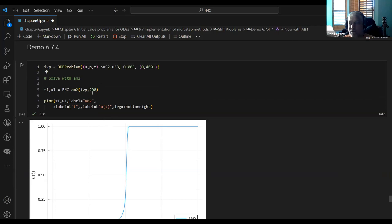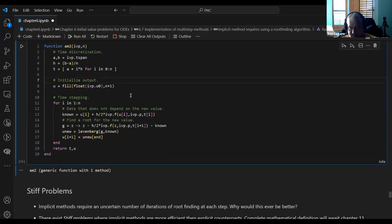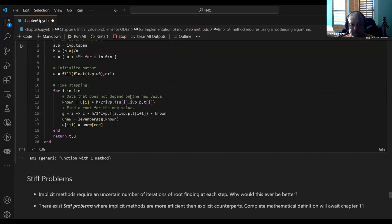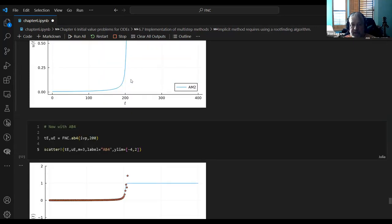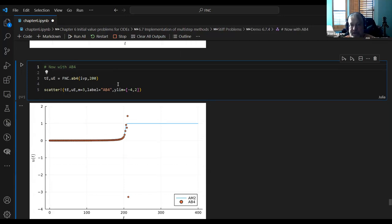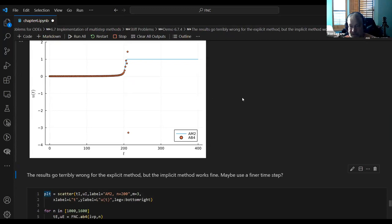So first we solve it with this implicit AM2 method we just talked about. Did I define these things? How does that work? Let's make sure, yeah. And this is what the solution looks like, it starts out small, that at some point around T equals 200, it rapidly changes state up to 1.0. This is kind of a classic stiff problem, where it's relatively constant for two phases, and one part just rapidly changes very, very quickly. And if we try to do that with the explicit AB4 method, it just loses track completely at the point of the transition there. So it just goes terribly wrong, as the text says.